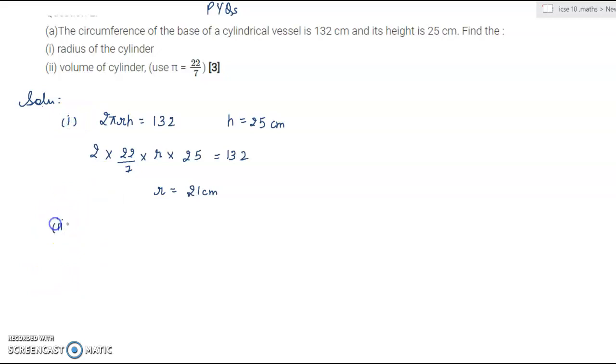First part is over. Second part, volume of cylinder. Formula is πr²h. You'll have to learn all these formulas. Make sure that you have a formula notebook. 22 by 7, multiply 21², multiply h, that is 25. This is 34,650 centimeter cube.